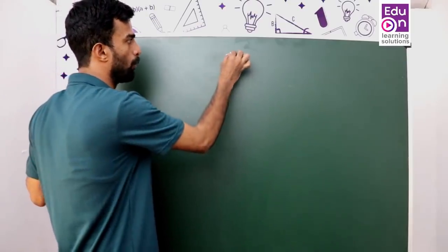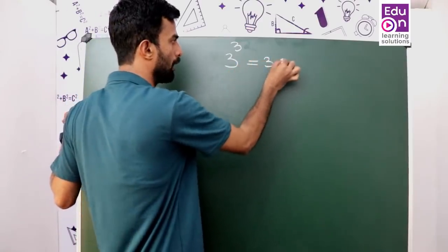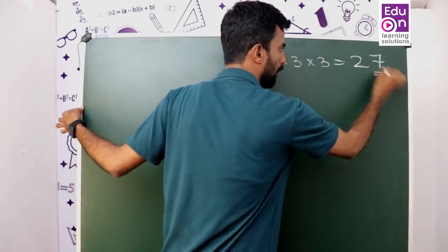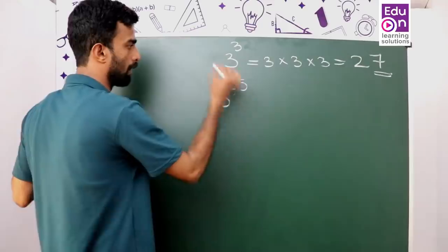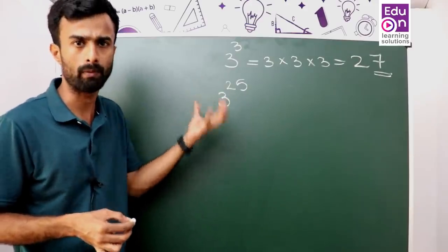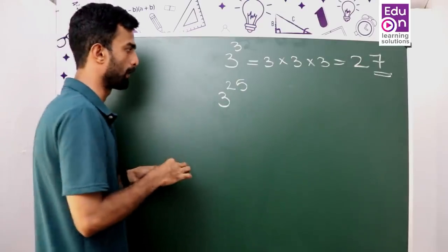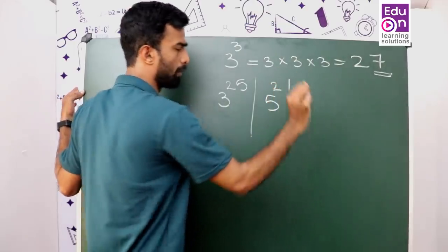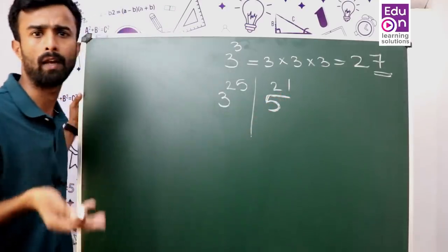Now we will check 3 cubed — find the unit place. We calculate 3×3×3, which gives 27, then 27×6. We work through 7×7, 3×3, and 3×25 to identify the pattern.